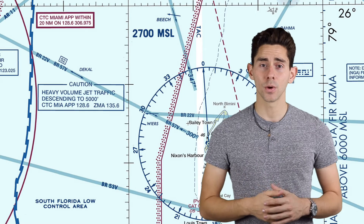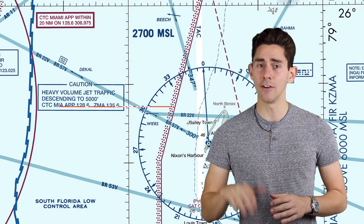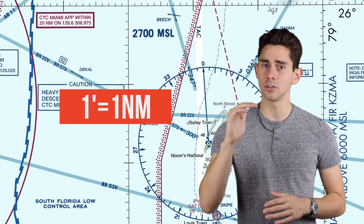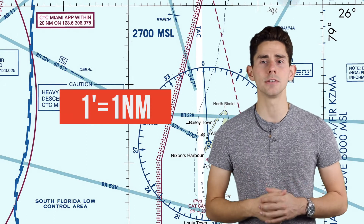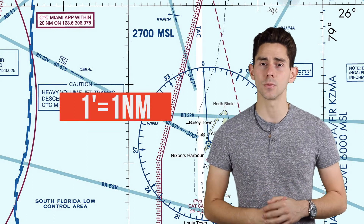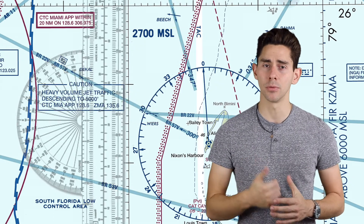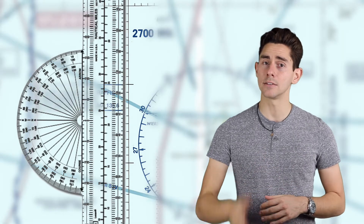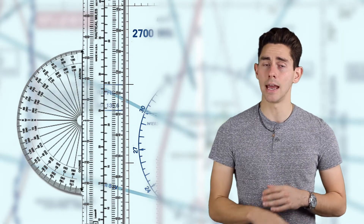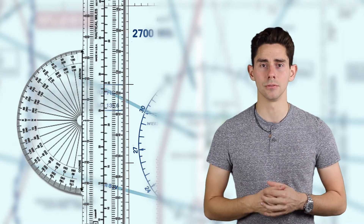The second thing we're going to talk about is lines of longitude. Every minute that you see on your chart is one nautical mile. You can easily use this to determine distance without having to bring out your plotter, but remember it's only lines of longitude and not latitude.